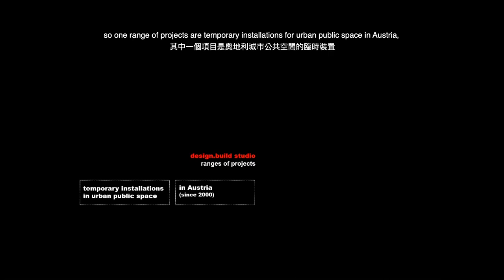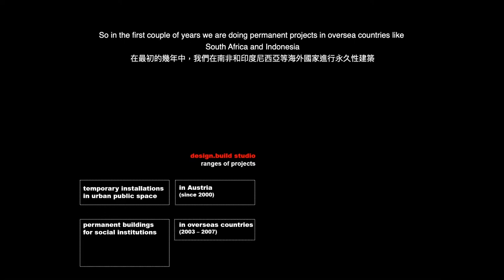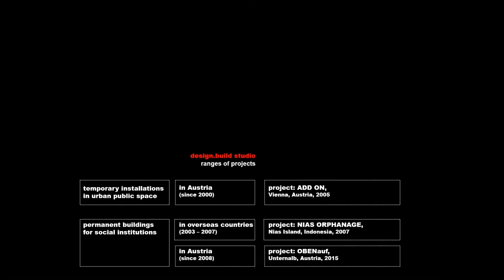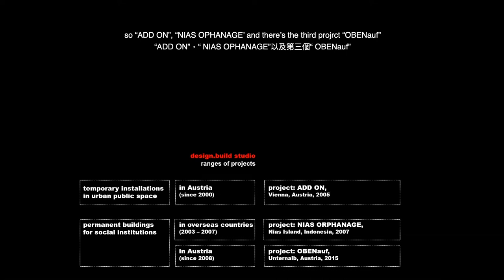There are basically two ranges of projects we are doing within our Design Build studio. One range is temporary installations for urban public space in Austria. The other range is permanent buildings for social institutions. In the first couple of years, we were doing permanent projects in overseas countries like South Africa and Indonesia. But in the meantime, we put our focus on projects located back in Austria. I will show you one exemplary project from each range — Airdaon, the orphanage, and a third project, Umbauf.